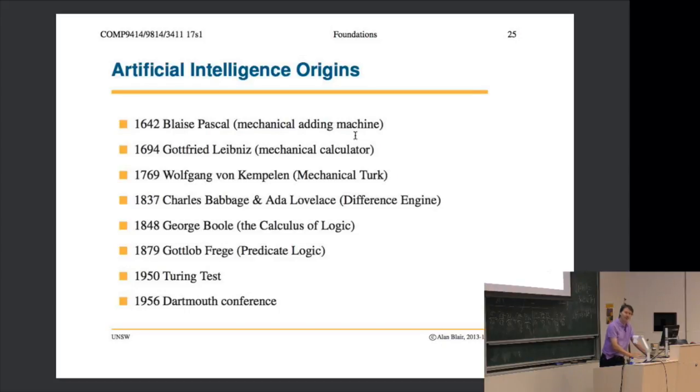Finally we get to the Dartmouth conference in 1956, which was the first AI conference. A lot of the people at that conference became leading researchers in AI. Marvin Minsky died last year - he might have been one of the last survivors.